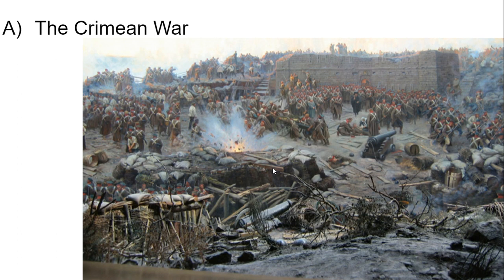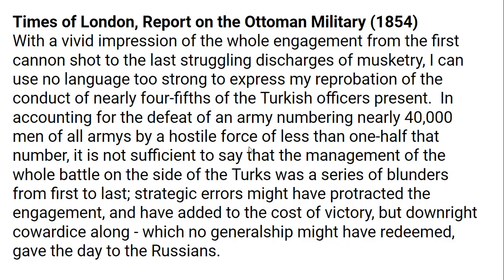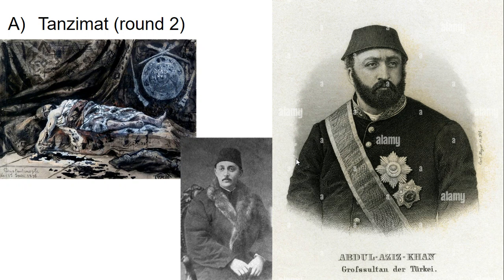The Ottomans absolutely struggled in the land battles of the Crimean War, so much so that England and France actually intervened on the side of the Ottomans and went and fought back, destroying the Russians. The Crimean War was incredibly unpleasant. All of this leads to a spectacular humiliation for the Ottoman Empire, and they push into another round of Tanzimat.